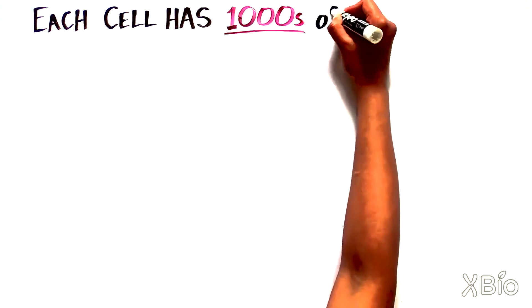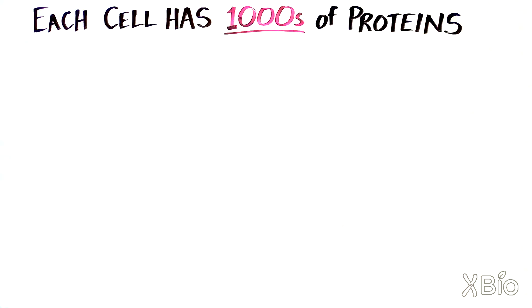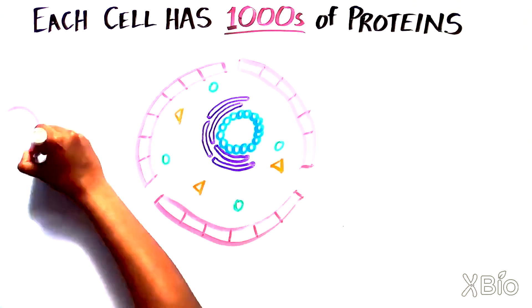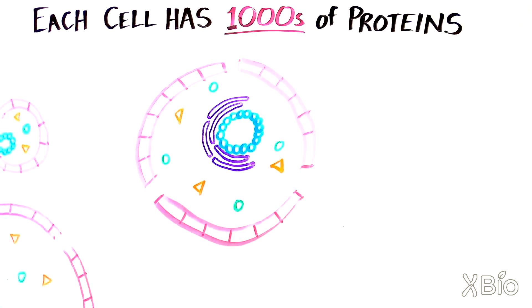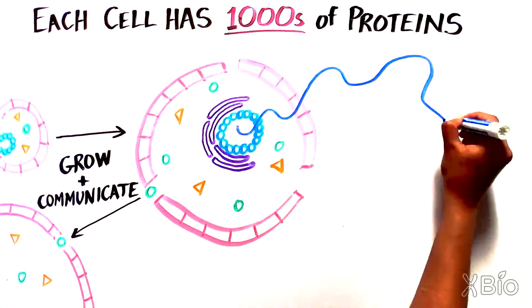Did you know that each cell has thousands of different types of proteins? Proteins are the building blocks of our cells and they have many different important functions, like helping cells grow and communicate with other cells.